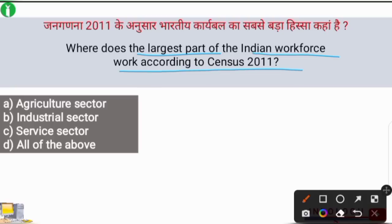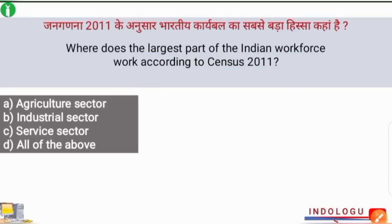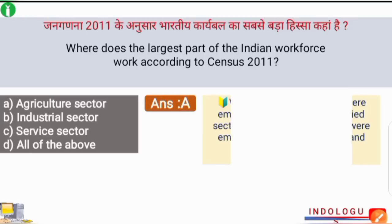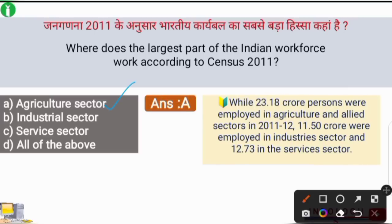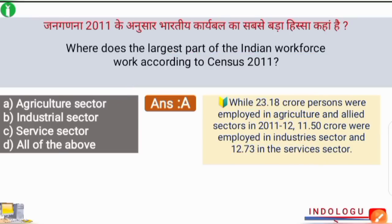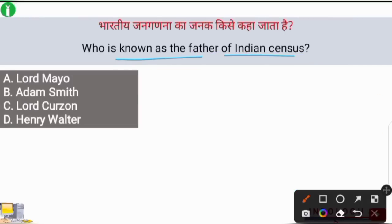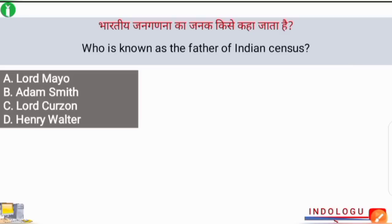Next question: where does the largest part of the Indian workforce work according to the census of 2011? The correct answer is option A — the agricultural sector, i.e., the primary sector. The largest part of the Indian workforce was in agriculture. About 23.14 crore persons were employed in agriculture and allied sectors in 2011-12, while 11.50 crore were in industry and 12.73 crore in the service sector.